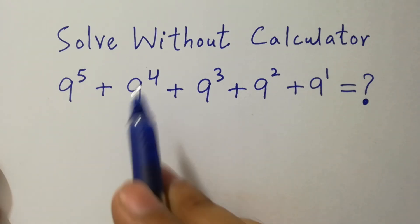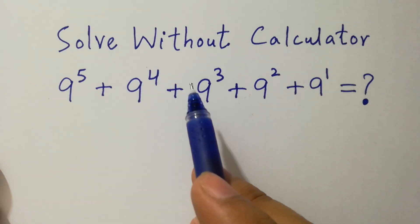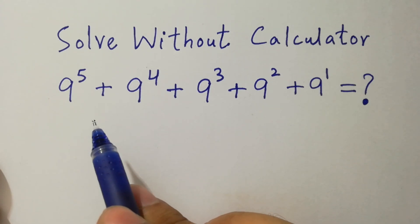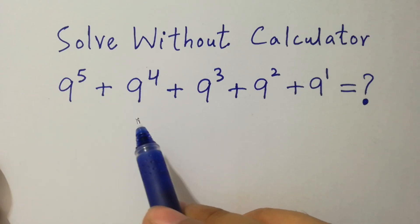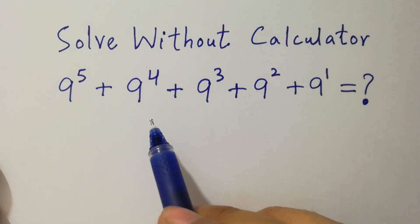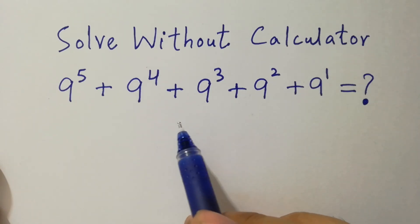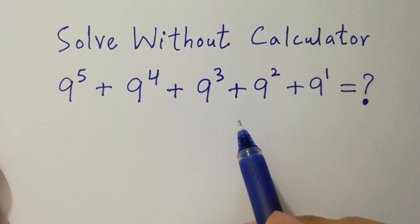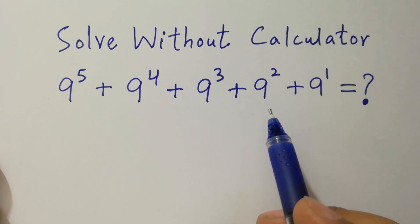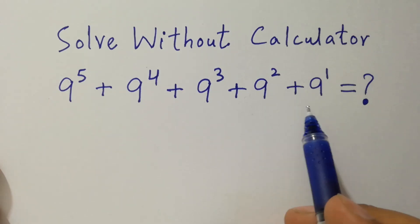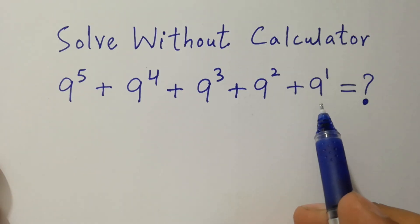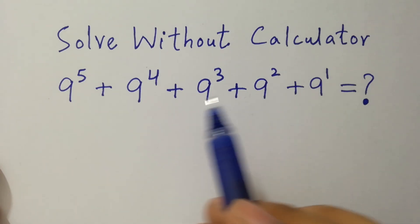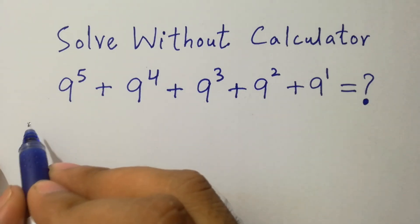Hello friends. Solve without calculator: 9 to the power 5 plus 9 to the power 4 plus 9 to the power 3 plus 9 to the power 2 plus 9 to the power 1 equal to what? Let's have a solution.